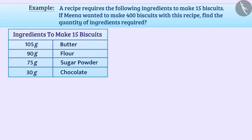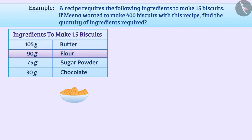Ingredients required to make 15 biscuits: 105 grams butter, 90 grams flour, 75 grams sugar powder, 30 grams chocolate.